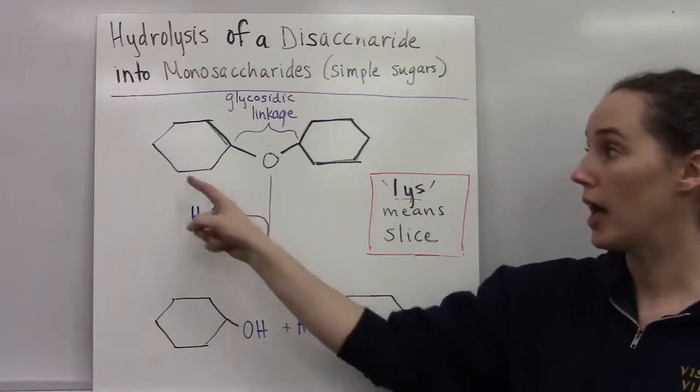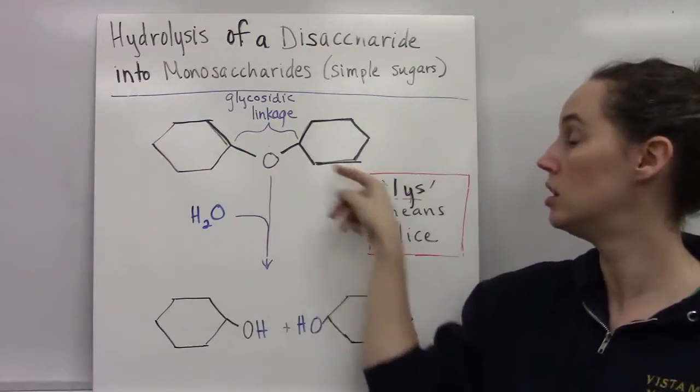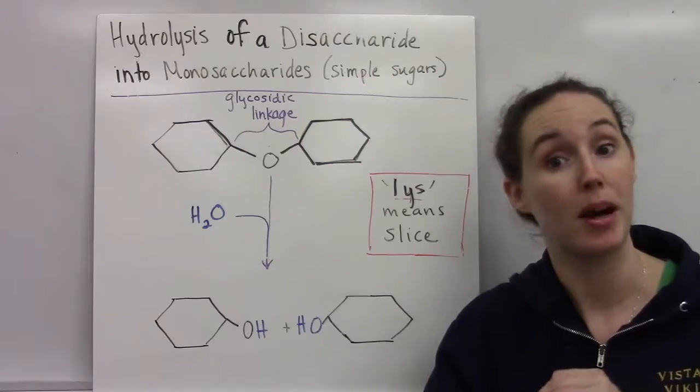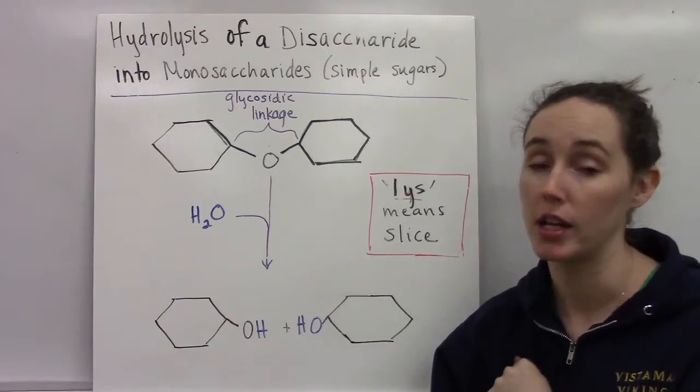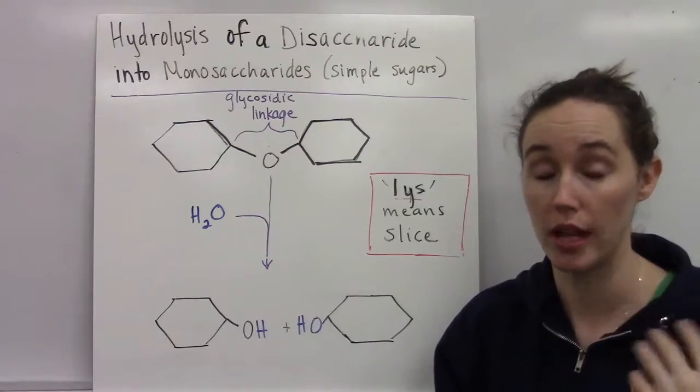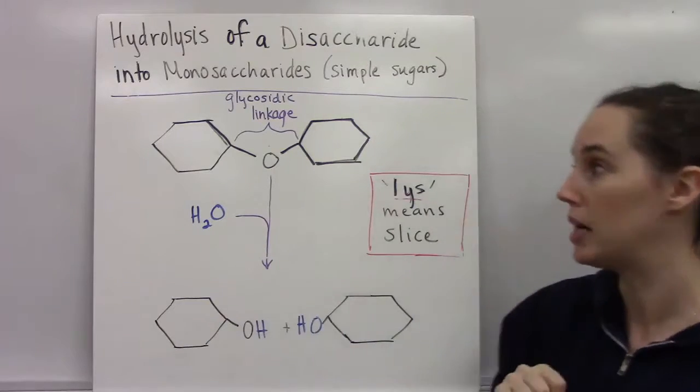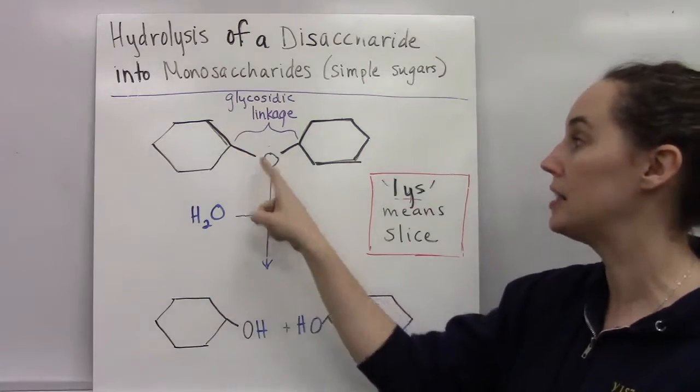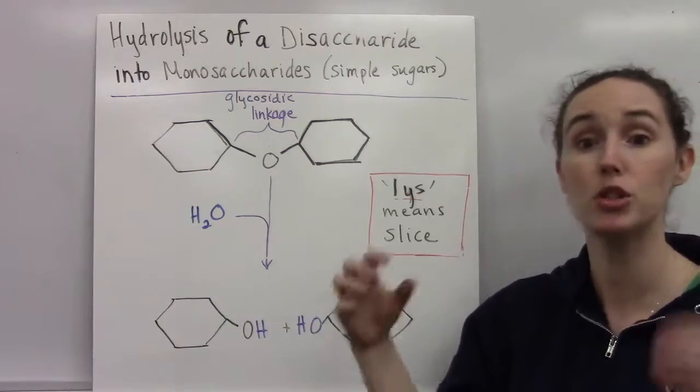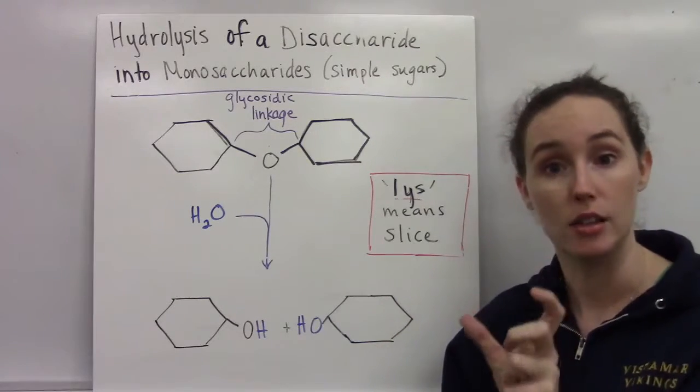In this diagram, I have two hexoses, right, so two six-carbon sugars, stuck together by a bond called a glycosidic linkage. Now, if you're in AP biology, you do need to know the name of glycosidic linkage. If you are in mod science biology, you don't need to know glycosidic linkage, but you do need to recognize that these hexagon-shaped molecules are part of carbohydrates. They're simple sugars. And these come together with an oxygen in the middle. But I want to break these apart by adding water. That's what hydrolysis means. So the hydro in hydrolysis is water.